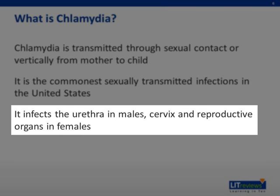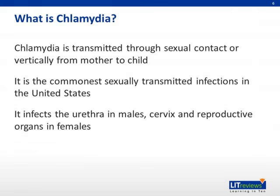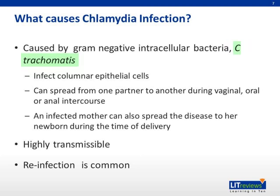It infects the urethra in males, and in females it infects the cervix and the reproductive organs. The bacterium Chlamydia trachomatis is an obligatory intracellular bacterium. It infects columnar epithelial cells and survives by replication that results in the death of the cell. It is a highly transmissible disease with an incubation period of about 7 to 21 days. Most importantly, there is a significant asymptomatic reservoir and reinfection is common.